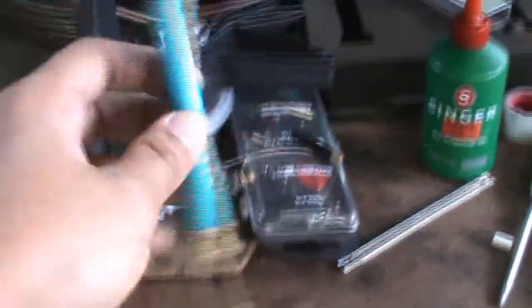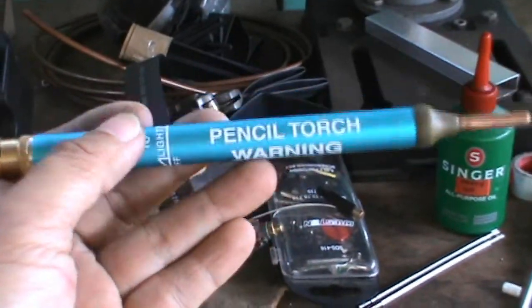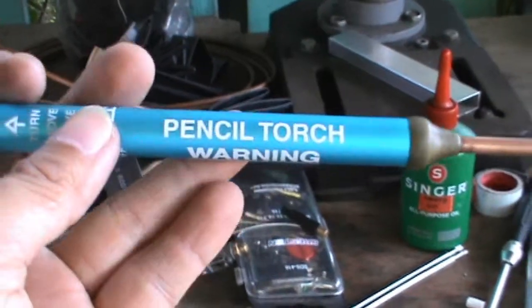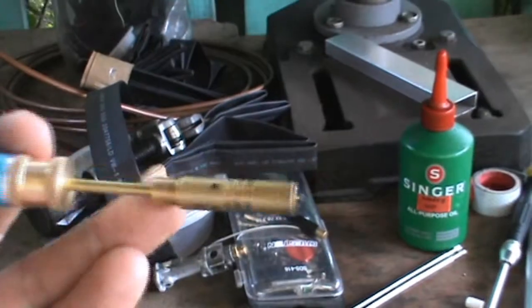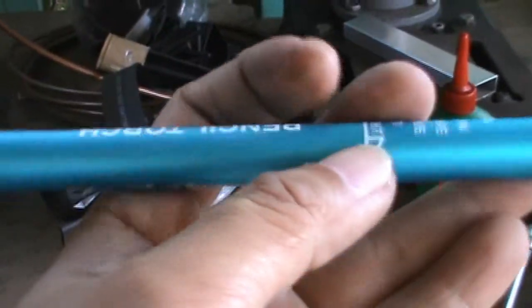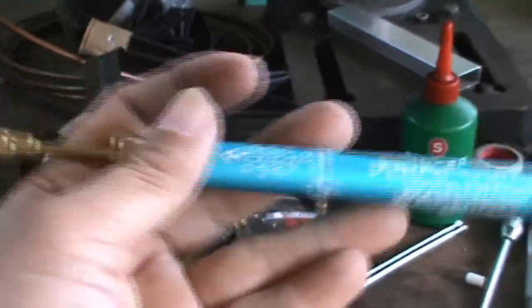So this is a pencil torch. If you have one of these, this is a good soldering tool because of the small flame footprint. But the problem with this pencil torch is usually the blocking of the flame after using it for a while and charging it a few times, since the cartridge is too small.